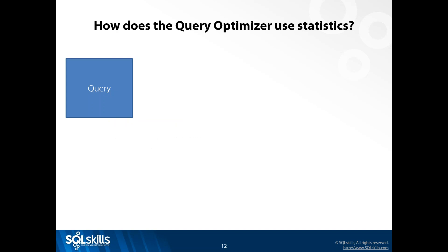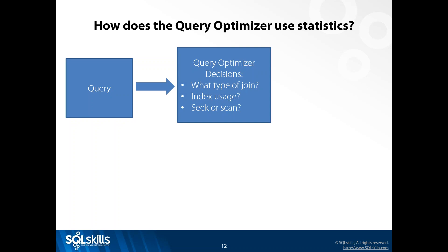How does the optimizer use these statistics? Why does it care about the distribution of data? When you write a query - let's say I'm going to query the person table and select everybody who has a last name of Smith - that gets passed to the query optimizer. The optimizer looks at that query and decides what kind of join it needs, whether to use indexes, whether to pull data directly from the table, whether to do a seek or a scan.